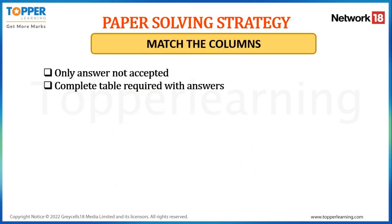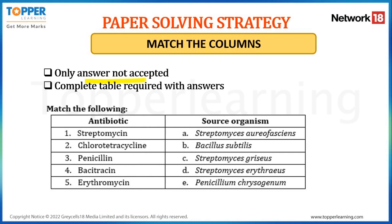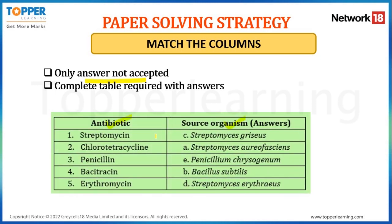Let's move to another typology: 'match the columns' — a very easy type of question provided you are thorough with the answers. In these questions, only the answer is not sufficient; a complete table is required with your answers in column B. For example, column A gives a list of antibiotics and column B gives the source organisms. In the answer paper, list the antibiotics as in column A, but write the matched source organism in column B: Streptomycin — Streptomyces griseus; Chlorotetracycline — Streptomyces aureofaciens; Penicillin — Penicillium chrysogenum; Bacitracin — Bacillus subtilis; Erythromycin — Streptomyces erythreus.